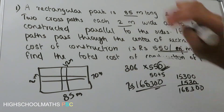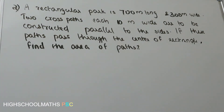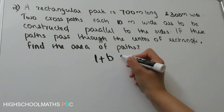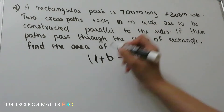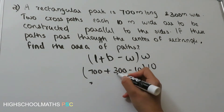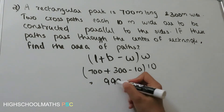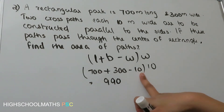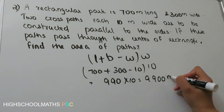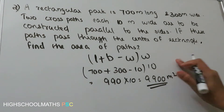This is 700m long and 300m wide with two cross paths, each 10m wide, constructed parallel to the sides. If these paths pass through the center of the rectangle, find the area of the path. The area of the path is L plus B minus W, into W. This is 700 plus 300 minus 10, into 10.